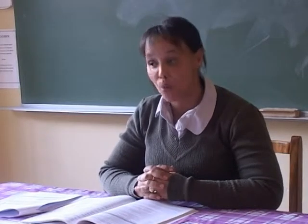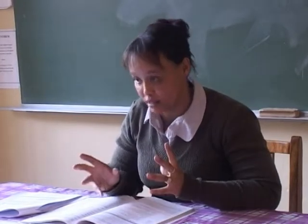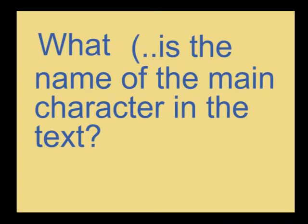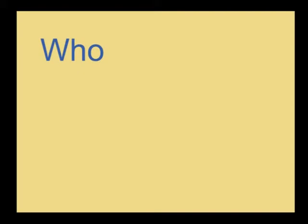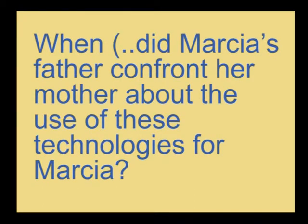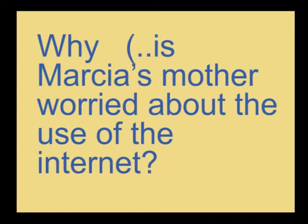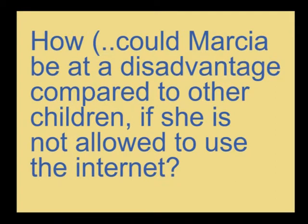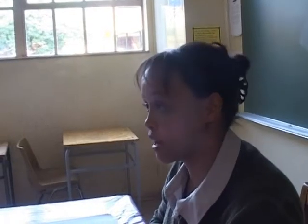The questions we are asked in a comprehension task can be: What — what is the name of the main character? Who — who agrees that Marsha should have a cell phone? Where — where are the computer games found which are dangerous when played uncontrolled? When — when did Marsha's father confront her mother about the use of these technologies? Why — why is Marsha's mother worried about the use of the internet? And how — how could Marsha be at a disadvantage compared to other children if she is not allowed to use the internet? Will you be able to answer a comprehension test properly now? Yes!